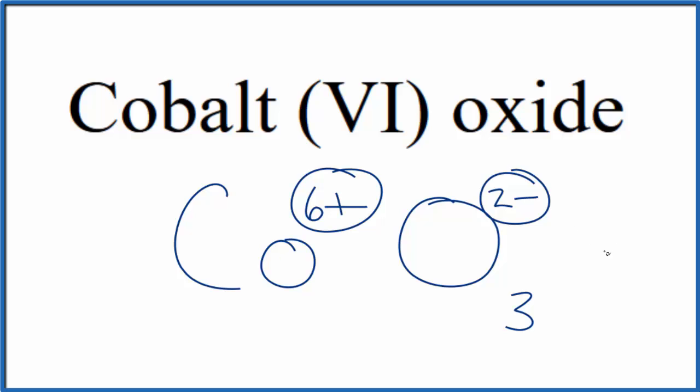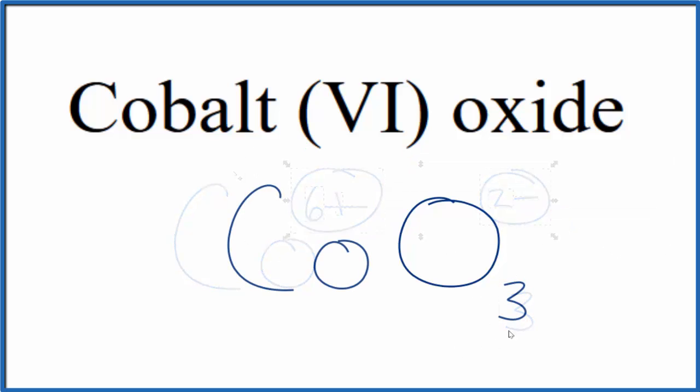Give us a net charge of zero. So this is the formula for cobalt VI oxide, CoO3.